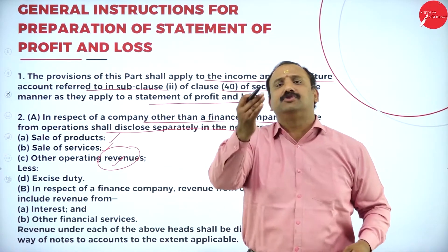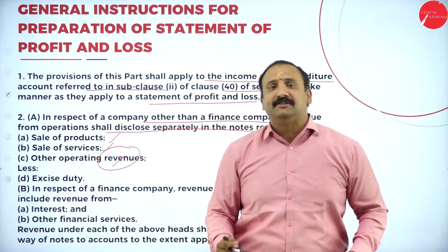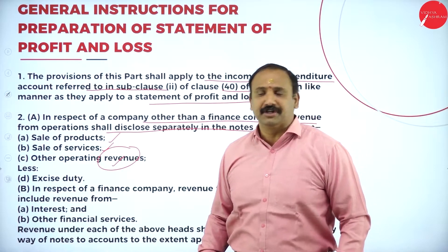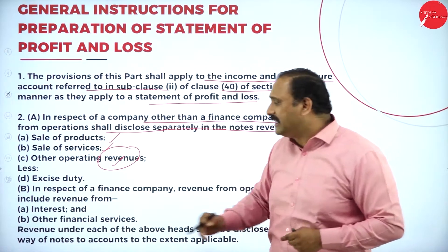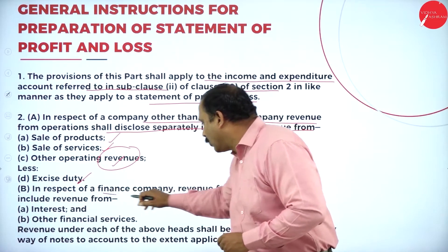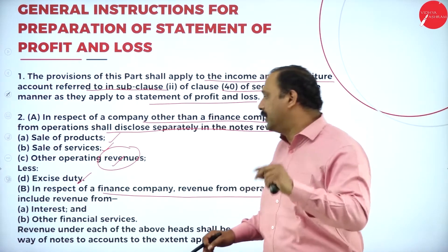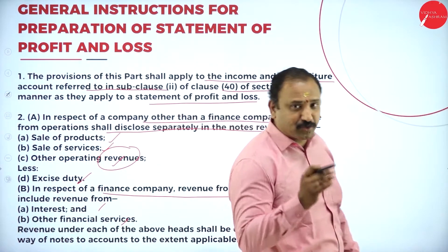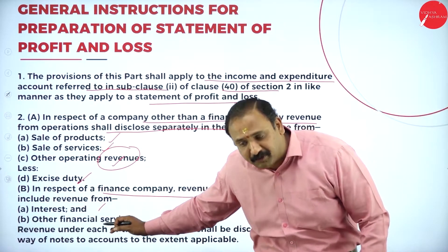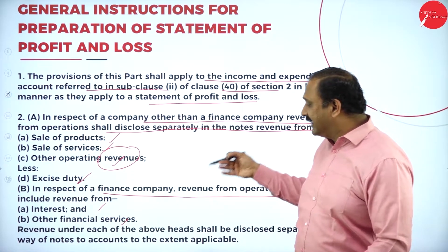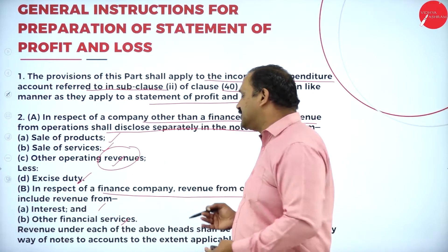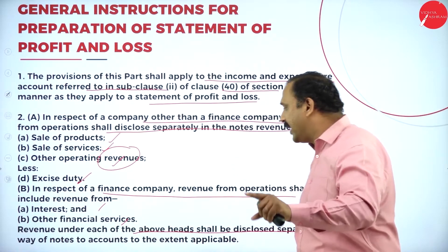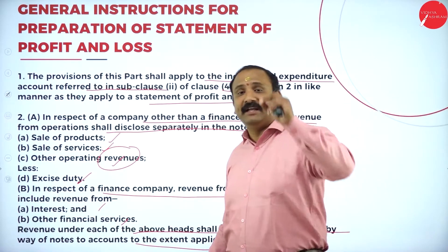Other operating revenues cover any other sector, business format, or vertical from which you are generating revenue. In respect of a finance company, revenue from operations will also include interest and other financial services, because that is the main source of income for finance companies. Revenue under each of these heads shall be disclosed separately by way of notes to the accounts, to the extent applicable.